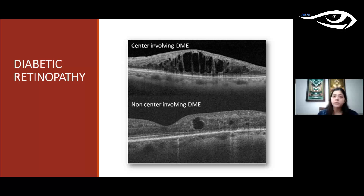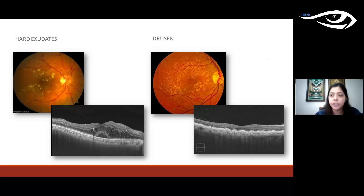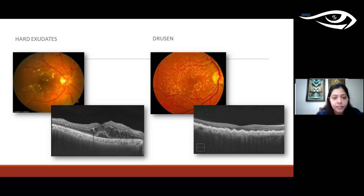OCT helps differentiate center-involving from non-center-involving diabetic macular edema (DME) — in center-involving, the edema involves the fovea, while in non-center-involving it spares the fovea. This helps plan appropriate treatment. OCT also clearly differentiates hard exudates from drusen: hard exudates appear as hyper-reflective deposits within the retina, whereas drusen appear as accumulations beneath the RPE throwing it into irregularities with otherwise normal overlying retina.